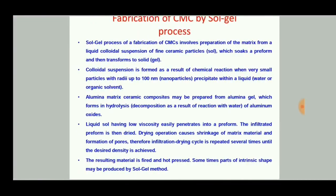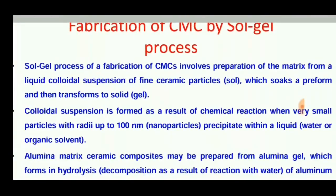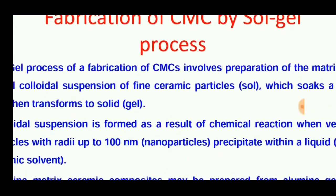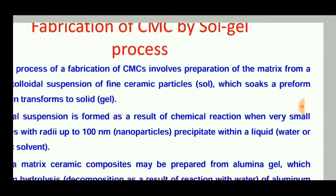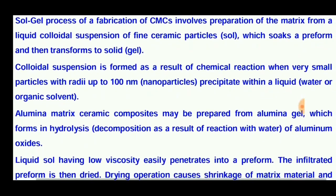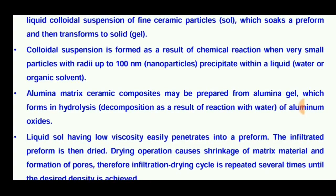The fabrication of the CMC by sol-gel process involves the preparation of the matrix from a liquid colloidal suspension of fine ceramic particles — that is a sol — which soaks into the reinforcement. They then mix together and undergo chemical or catalytic reactions, and then transform to a solid orange gel. This colloidal suspension is formed as a result of chemical reactions.